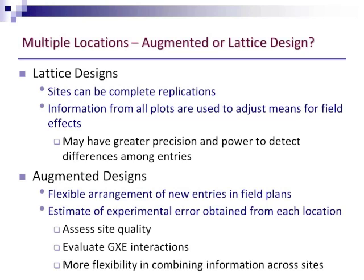If you're going to use augmented designs across locations, you also have the option to use lattice designs, in which case you could consider your sites to be complete replications and then have one rep of a lattice design within each location. The advantage is that you're using information from all of your plots to adjust means for field effects, so it seems likely that you could have greater precision to detect differences among your entries in that situation.